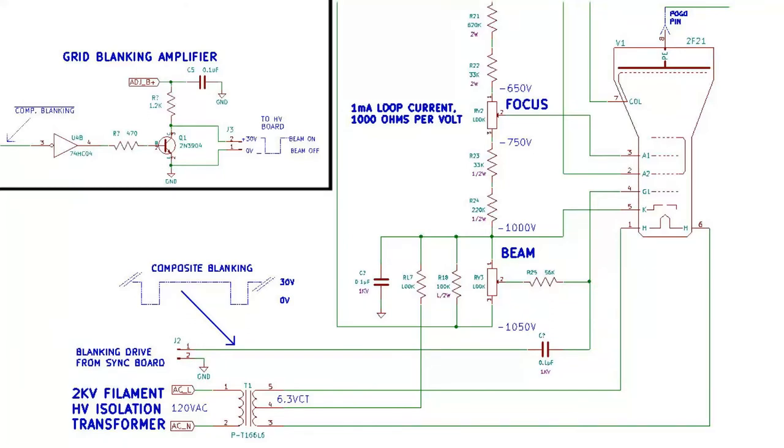So that is essentially the circuit involved in sending blanking to the grid. Now the cathode and the grid are where this occurs, so the cathode voltage must not change when the grid voltage is changing.